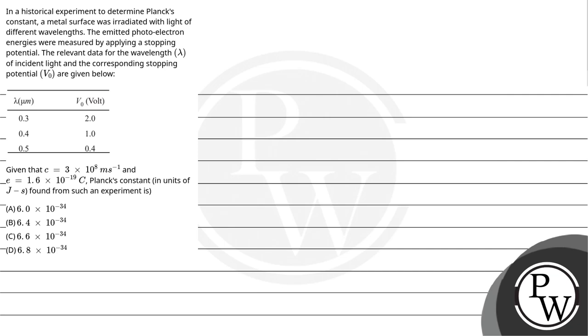Hello Bajo, let's read the question. In a historical experiment to determine Planck's constant, a metal surface was irradiated with light of different wavelengths. The emitted photoelectron energies were measured by applying a stopping potential. The relevant data for the wavelength of incident light and the corresponding stopping potential are given below.